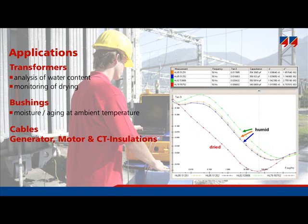It is not possible to make an analysis of the moisture content because the software insulation model is only valid for oiled paper bushings so far, but at least we can assess the insulation conditions qualitatively. This can be used during the manufacturing process of bushings and also for other types of equipment such as current transformers.